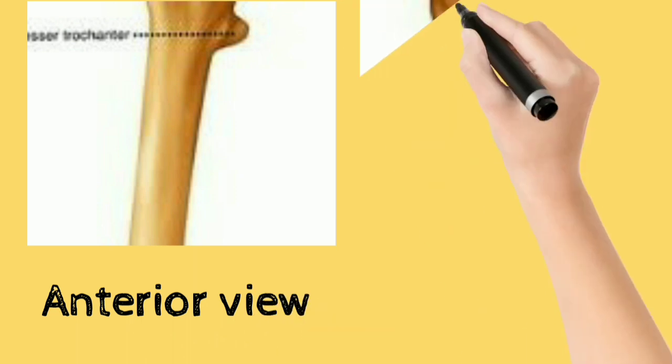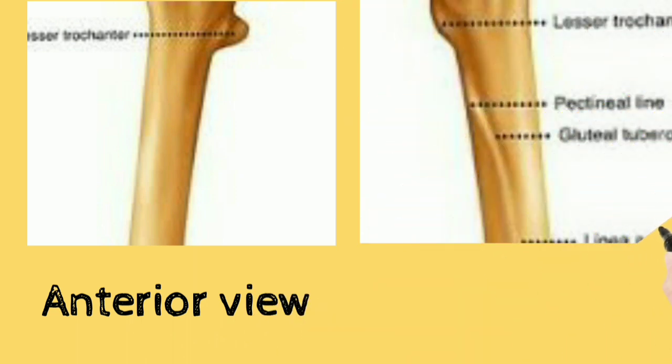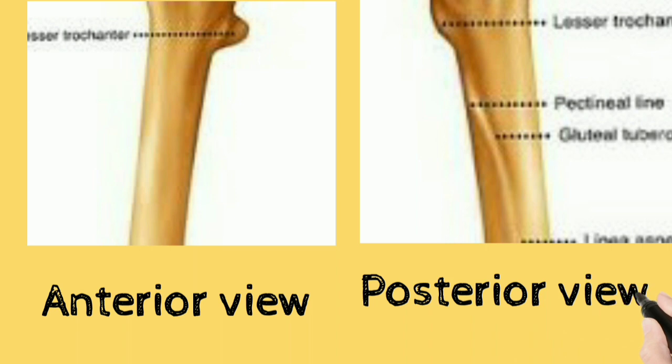The upper one-third of the shaft has four surfaces and four borders. The surfaces are anterior, posterior, lateral, and medial. The borders are the lateral border, medial border, spiral line, and the lateral lip of the gluteal tuberosity.